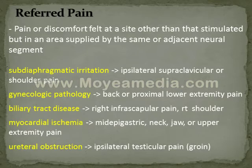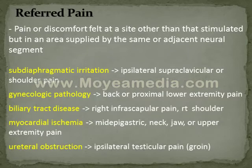Third is referred pain — it is pain felt at a site other than that stimulated, but in an area supplied by the same or adjacent neural segment. For example, in biliary tract disease like acute cholecystitis, pain may be referred to the right intrascapular region or right shoulder. Also, in cardiac ischemia, pain can be felt in the epigastric region, neck, jaw, or upper extremity.